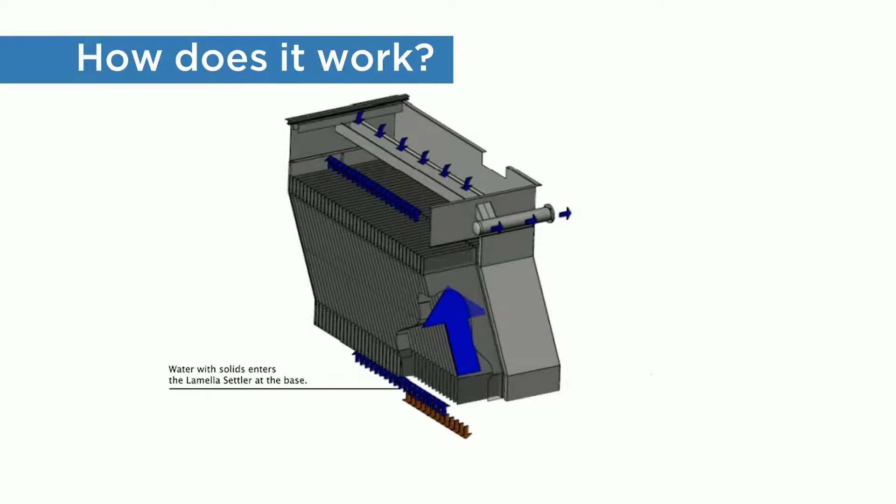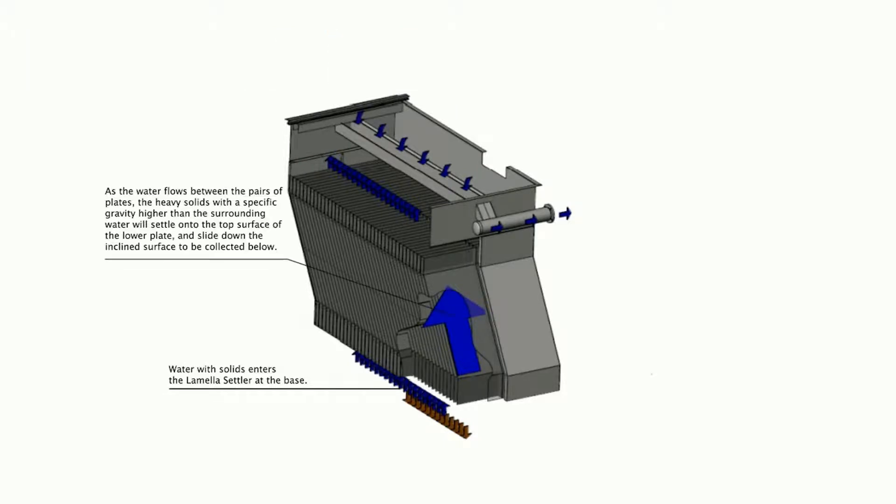The lamella clarifier consists of a series of closely spaced flat plates inclined at an angle. Preconditioned water with entrained solids enters the plate pack and flows between the plates. The path length, plate spacing, and angle of the plate are the usual engineering variables.